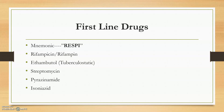The first-line drugs have high efficacy and low toxicity. Since tuberculosis is affecting the respiratory system, the mnemonic is RESPI — R-E-S-P-I. R for rifampicin, E for ethambutol, S for streptomycin, P for pyrazinamide, and I for isoniazid. All these drugs are tuberculocidal except ethambutol, which is tuberculostatic.